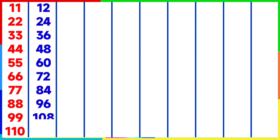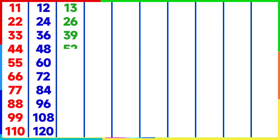12 nines are 108, 12 tens are 120. Table of 13: 13 ones are 13, 13 twos are 26, 13 threes are 39, 13 fours are 52, 13 fives are 65, 13 sixes are 78, 13 sevens are 91.